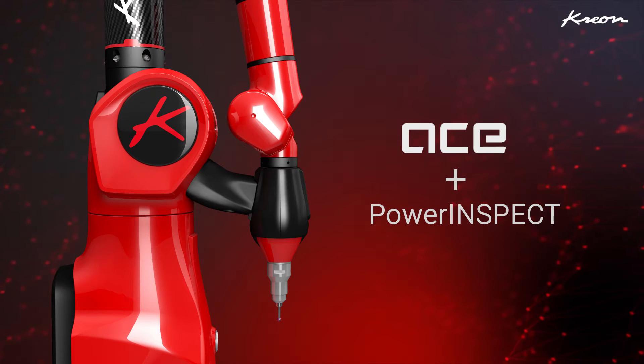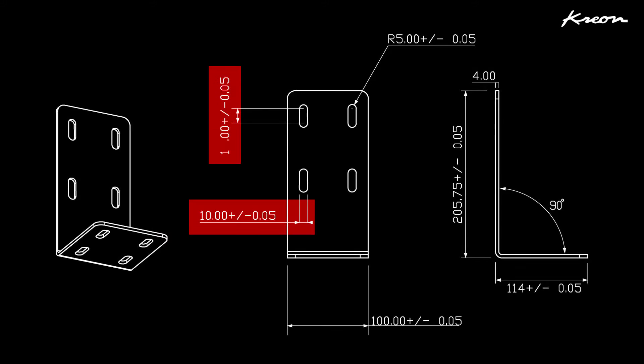For these simple measurements we use a Kreon Ace arm in its probing configuration and simple measurement module of Power Inspect. The dimensions as well as the tolerances will be used as nominal values while teaching the measuring program.